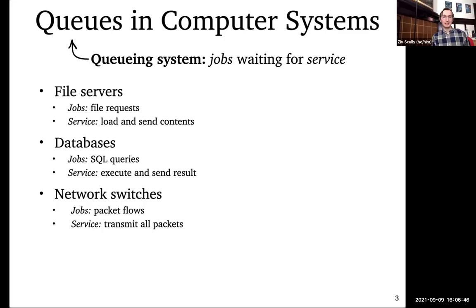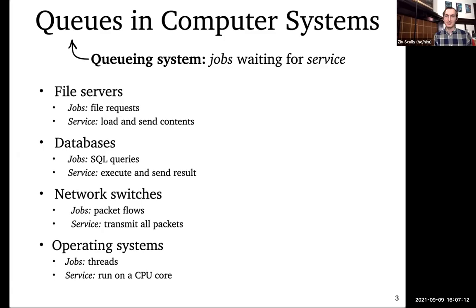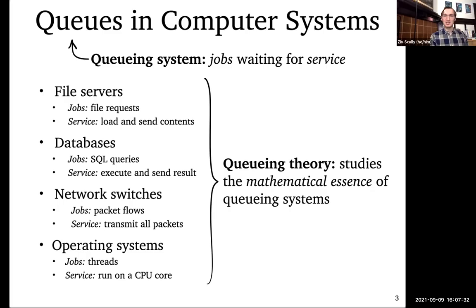Network switches are another example of a queue. One way to think about it: jobs are packet flows, and serving a flow means transmitting all the packets. Operating systems also involve queues — jobs are OS threads and serving means running on a CPU core. Queuing theory is about studying the essence of jobs waiting for service, abstracting away details to draw general conclusions.